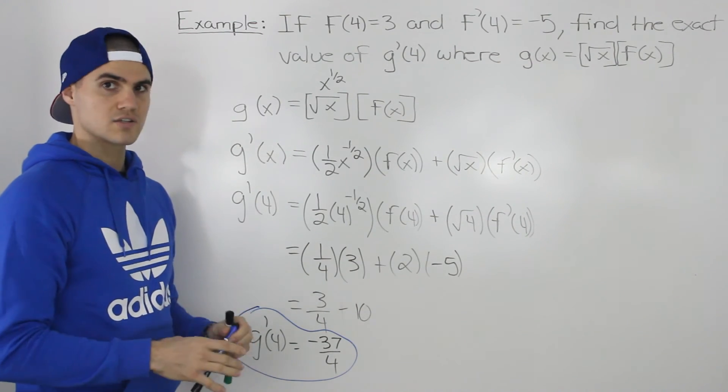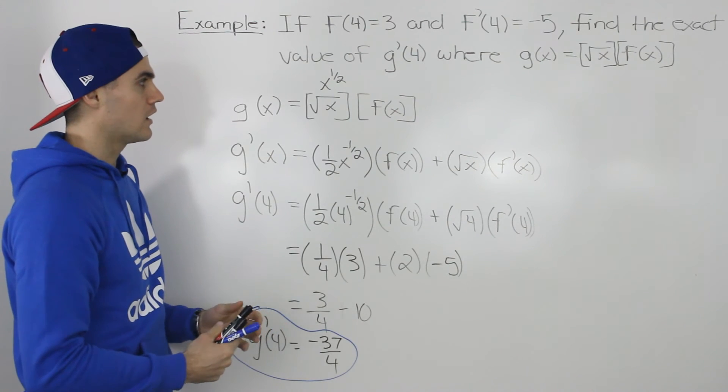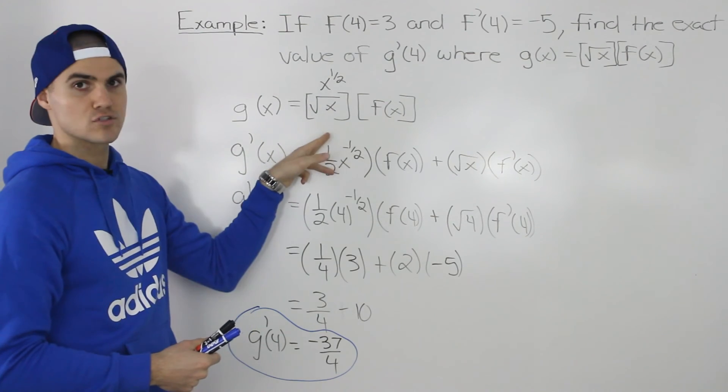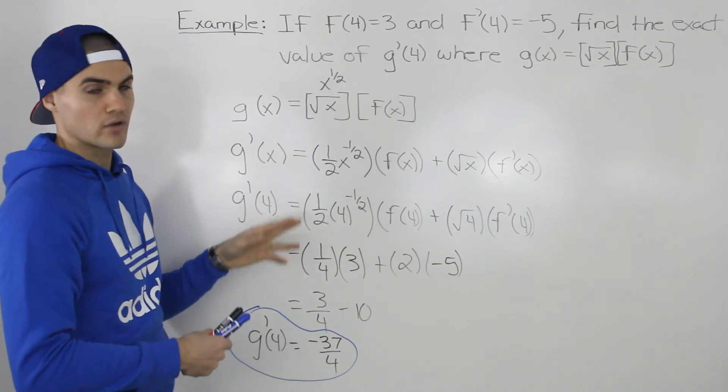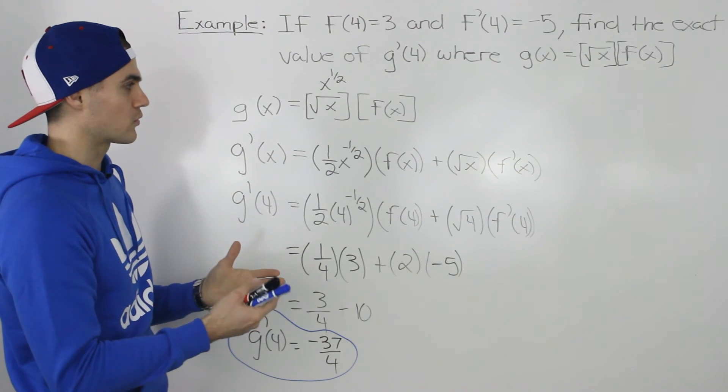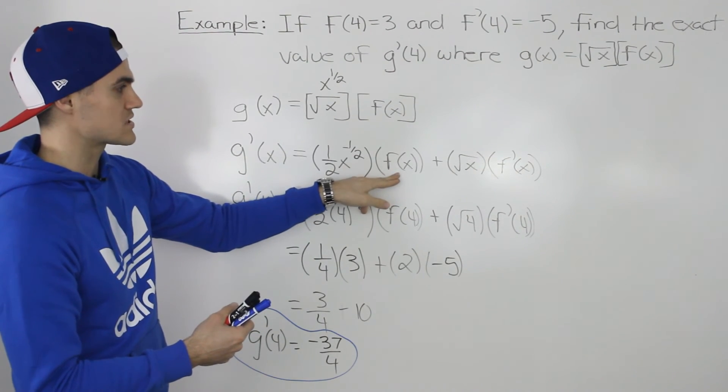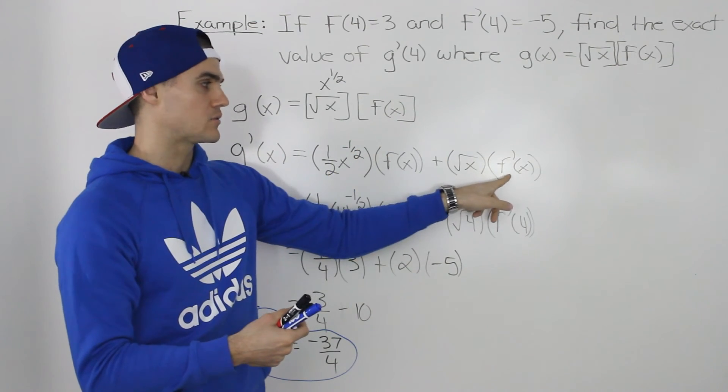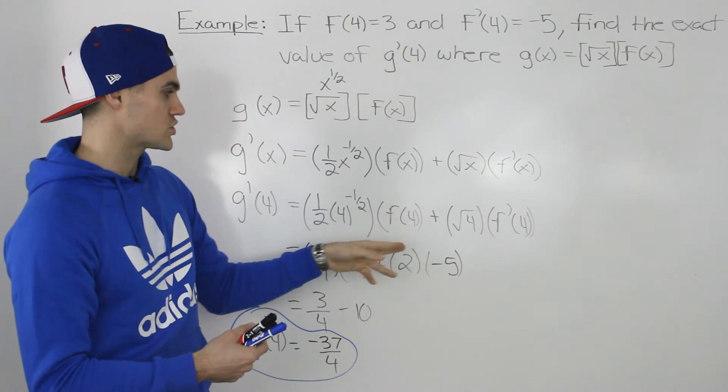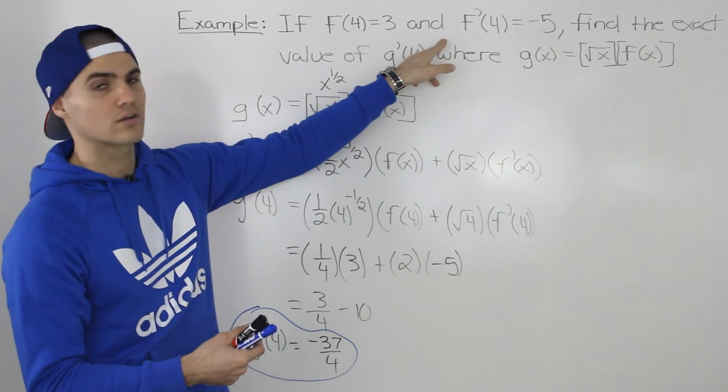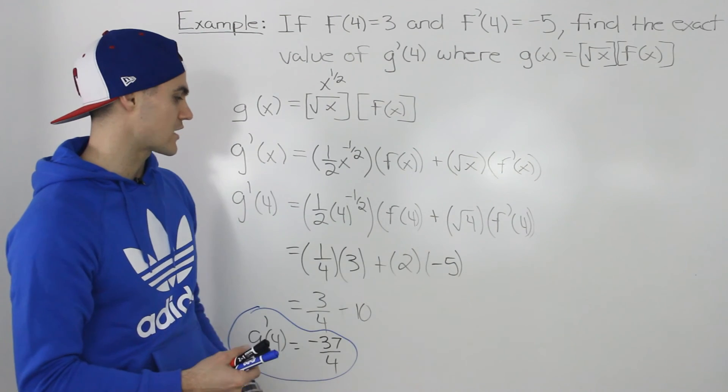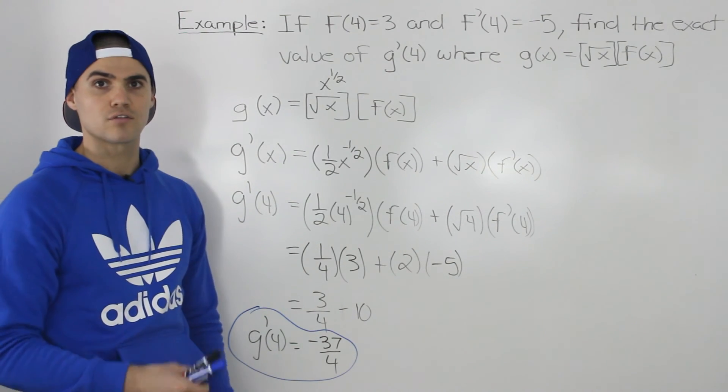So overall, it's not too bad. It's not a big question. There's not a lot going on. The trickiest thing is noticing that this function g(x) is the product of two functions, so we know to find its derivative we have to apply the product rule. And then this f(x) here, we have to keep in that general format whenever we're working with it. So in this first part, this was just f(x), but then when we found the derivative of it, it was f'(x). And then when we plug in that x value of 4 into the whole expression, we get f(4) and f'(4), and those are given values. So then we just plug those in into those brackets. These brackets would give us actual values, and then we get that final answer of -37/4.